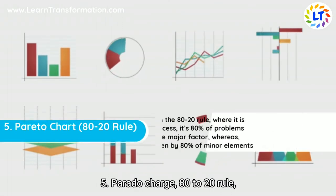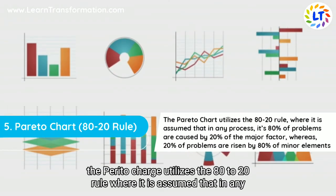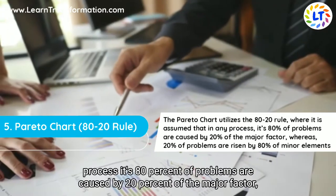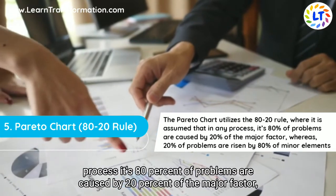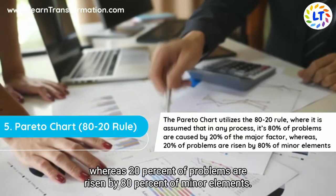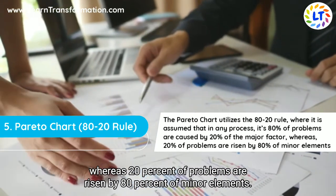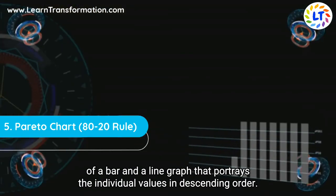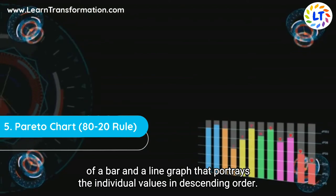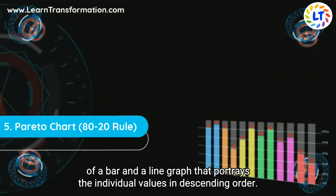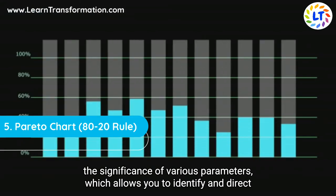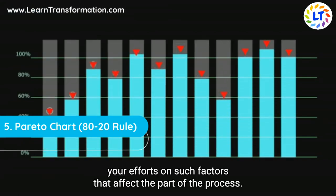The fifth tool is the Pareto Chart. The Pareto Chart utilizes the 80/20 rule, where it is assumed that in any process, 80% of problems are caused by 20% of the major factors, whereas 20% of problems are caused by 80% of minor elements. The Pareto Chart is a combination of a bar and a line graph that portrays individual values in descending order. This tool highlights the significance of various parameters, allowing you to identify and direct your efforts toward factors that most affect the process.